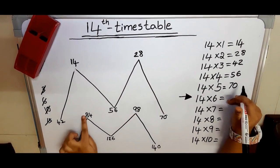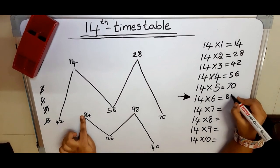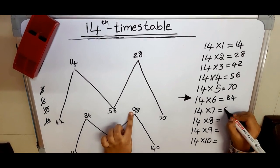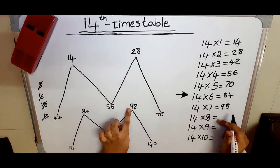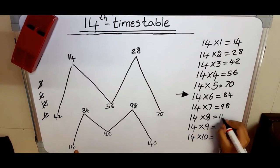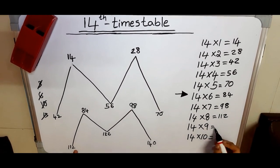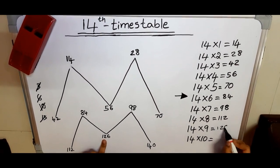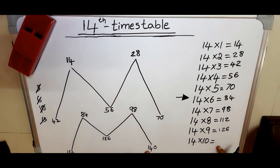Fourteen sixes are eighty-four. Fourteen sevens are ninety-eight. Fourteen eights are one hundred twenty-eight. Fourteen nines are one hundred twenty-six. Fourteen tens are one hundred forty.